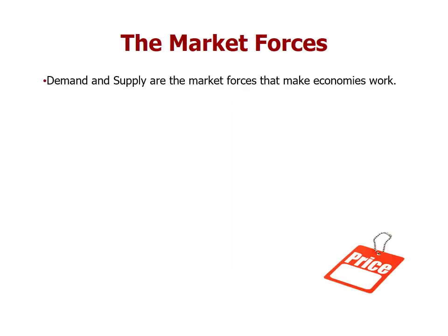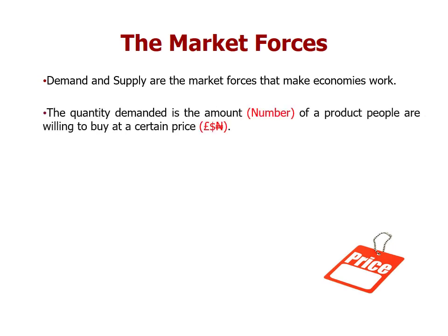The market forces — demand and supply — are the forces that make economies work. The quantity demanded is the amount, in terms of number, of a product people are willing to buy at a certain price. For example, say you want to buy pens and you walk into your local Tesco with 10 pounds. Pens are sold at one pound each, so you can buy 10 pens. If the price goes up to two pounds, you can only afford five pens.